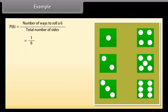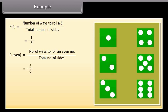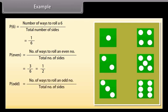Now we can see that the way to roll even numbers is 3. We can find the probability as P(even) equals number of ways to roll an even number upon total number of sides, which equals 3 upon 6, which is 1 upon 2. And way to roll odd number is 3. So P(odd) equals 3 upon 6, which is 1 upon 2.